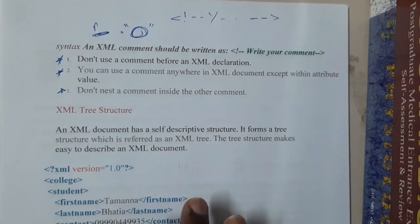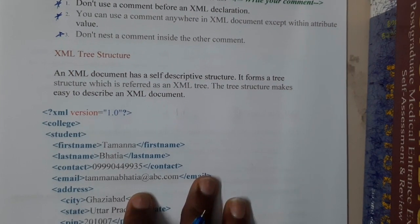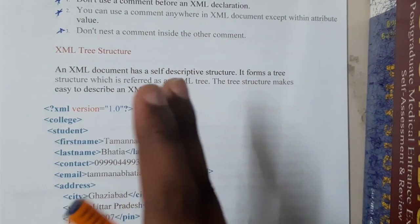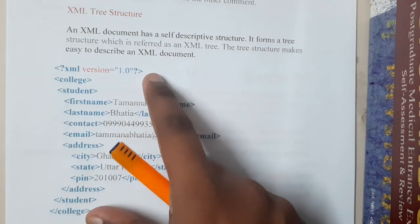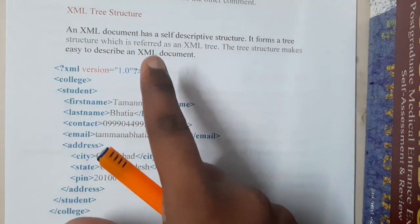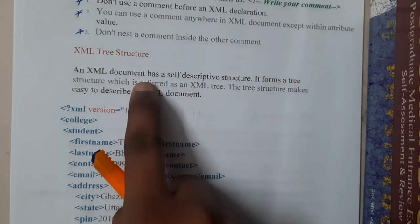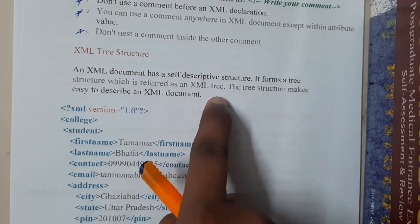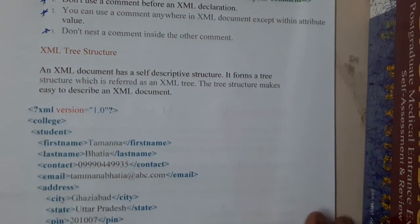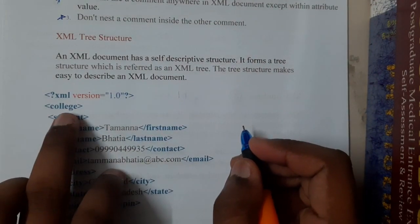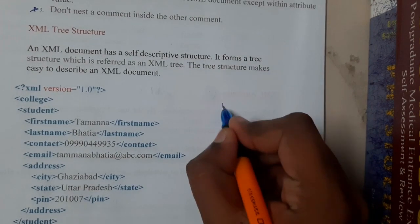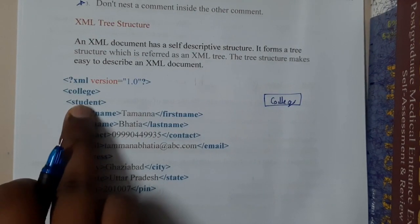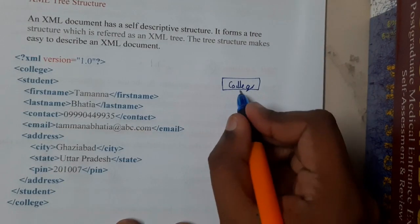Now let's do a deep dive into the XML tree structure — we covered an introduction in the previous lecture. An XML document has a self-descriptive structure and forms a tree structure. The tree structure makes it easy to describe the XML document. I'll be drawing the tree structure for this XML script so it will be clear.